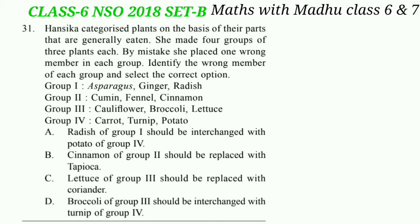Group 1: Asparagus, ginger, radish. Group 2: Cumin, fennel and cinnamon. Group 3: Cauliflower, broccoli, lettuce. Group 4: Carrot, turnip and potato.